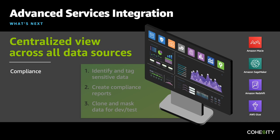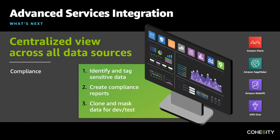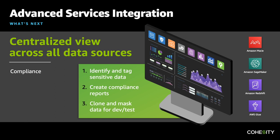What's next? We're not going to stop here. We've already been using lots of services from AWS, like Amazon S3 and Amazon EBS. But now we are going to do some integration with some of their advanced services, like Amazon Macie, Amazon SageMaker, Amazon Redshift, and AWS Glue. And perhaps as the first offering from that, we'll come up with compliance as a service — imagine the power of identifying and tagging sensitive data, creating compliance reports, cloning and masking data for dev tests. Beyond that, how about e-discovery, legal holds, data analytics, and training AI models — all available as a service within that DMaaS set of offerings.